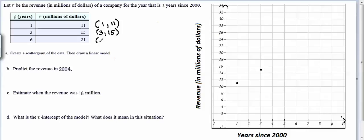And finally my last value here is 6 comma 21. To graph 6 comma 21 we're going to go over to 6 on the t-axis and then up to the value 21 on the r-axis. There's our three dots. Now we've created a scattergram.